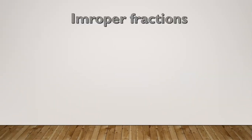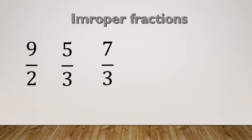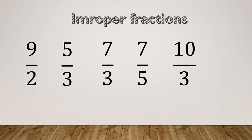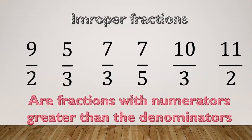Then we have improper fractions. Examples: 9/2, 5/3, 7/3, 7/5, 10/3, and 11/2. These are fractions where the numerator is greater than the denominator — the number on top is larger.